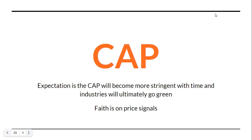The expectation is that the combined effect of CAP and NAP is that it would become more stringent with time and industries will ultimately go clean. The entire logic behind CAP and NAP is that price signals would ultimately reduce pollution. For example, if petroleum becomes more costly, people would consume less petroleum and move to cleaner fuels like biodiesel. If you make the output of fossil fuel industries more costly, people would move to cleaner options — this is the faith in price signals.